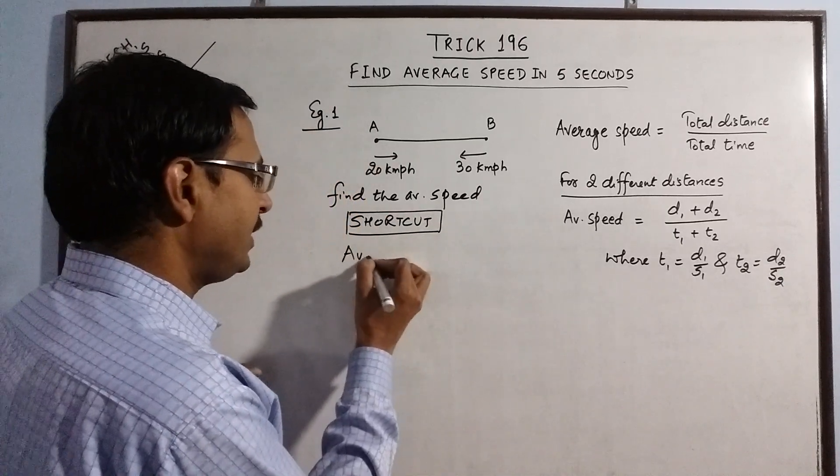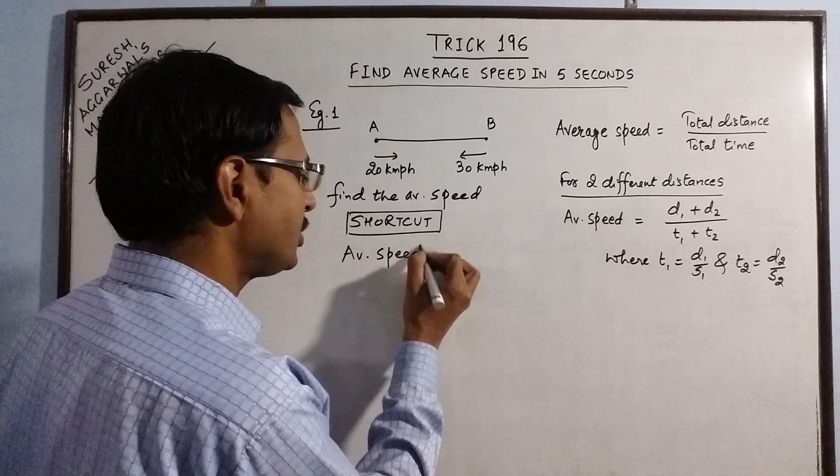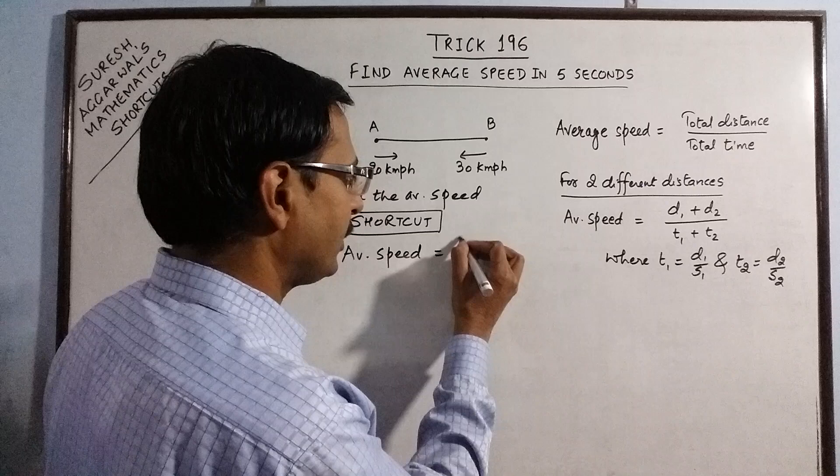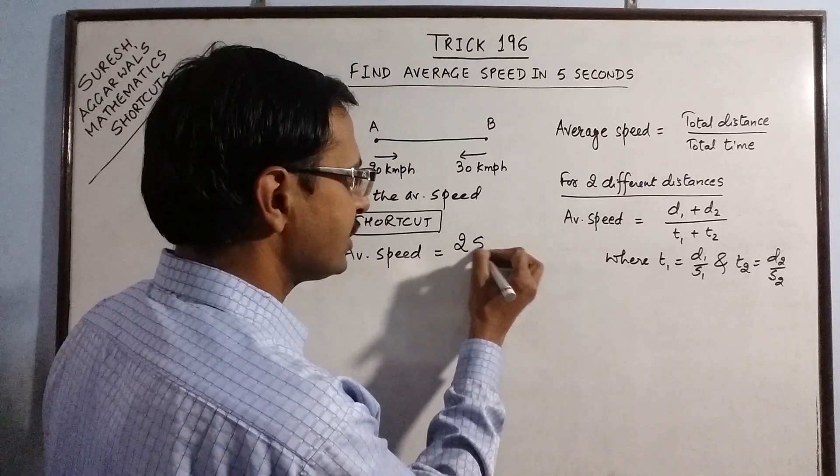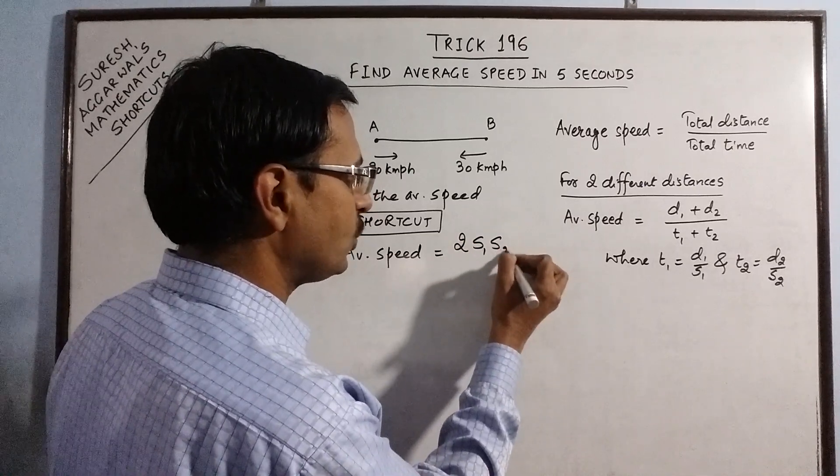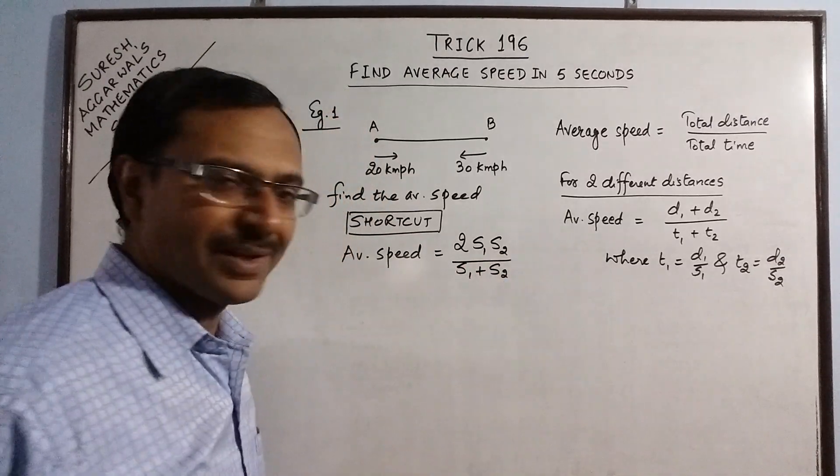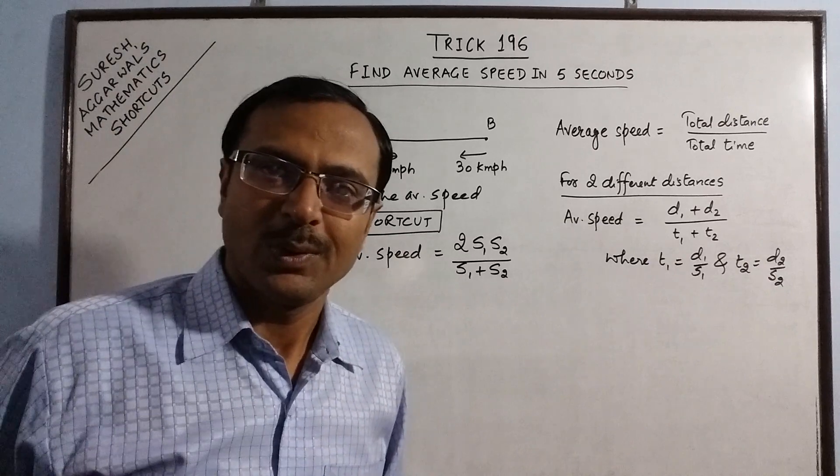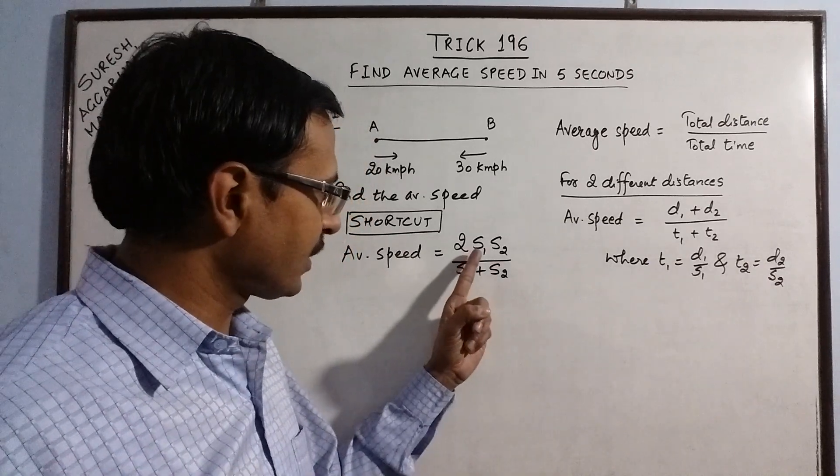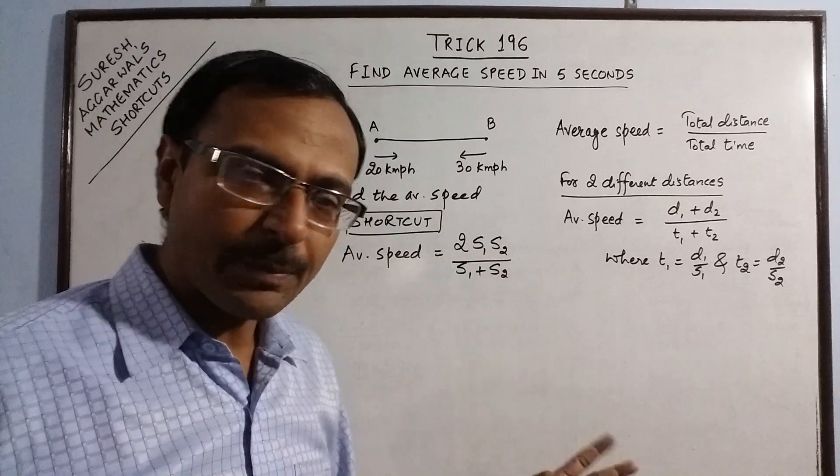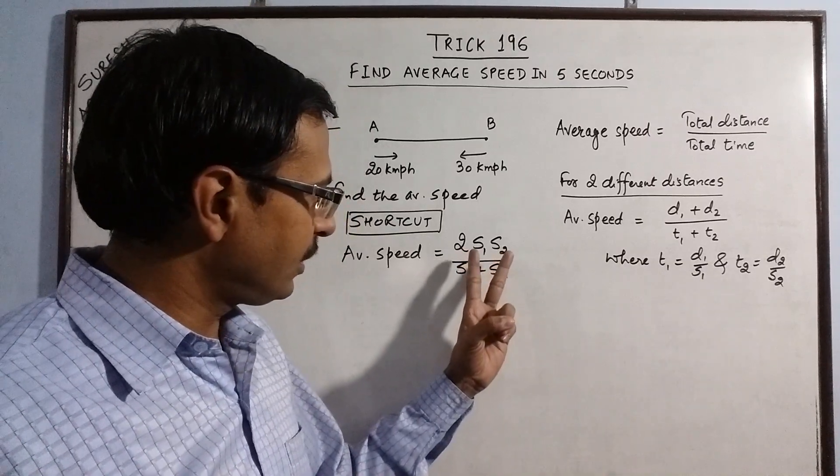Now, I am going to discuss the shortcut for finding this. For finding the average speed you will just need to substitute the two given speeds in this formula: 2 speed 1 speed 2 upon speed 1 plus speed 2. So, the two speeds we have to substitute in this formula.